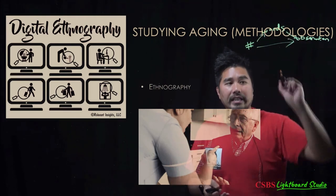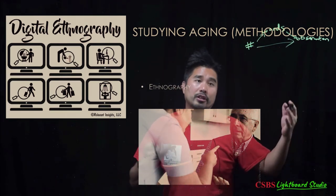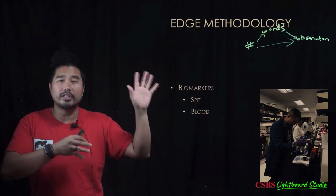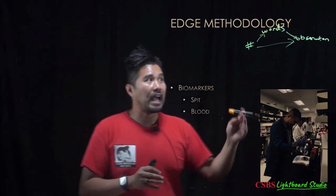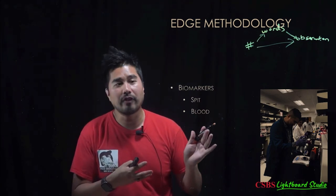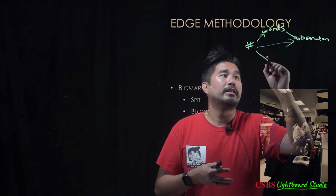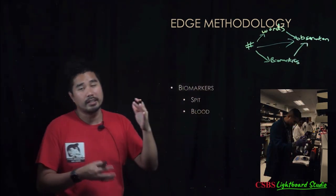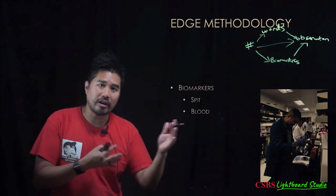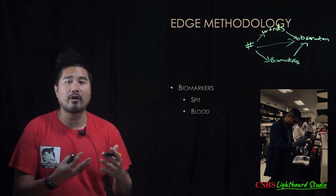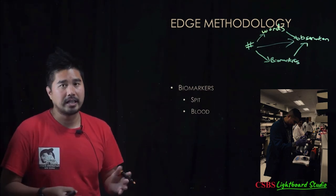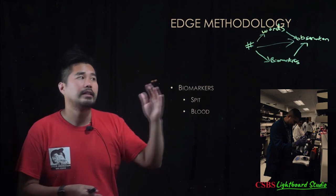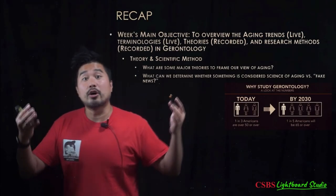You can analyze words, numbers, and observations, and triangulate across them to build a strong case for something. Beyond those three, there are also biomarkers. At a spit camp at UC Irvine, we learned to analyze saliva samples — not just for cortisol stress markers but for many other things, since spit is more easily accessible than blood. We can collaborate these biomarkers with other data sources.